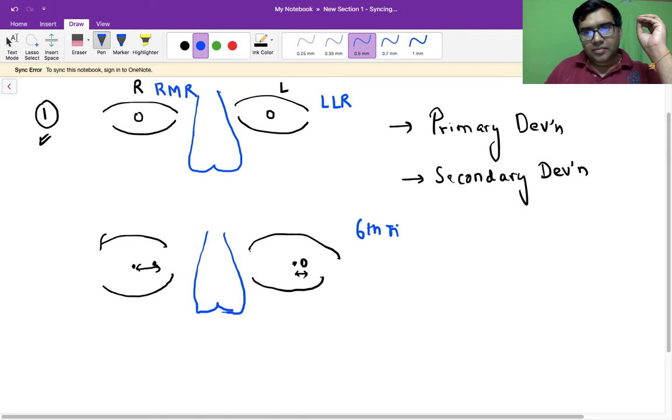nerve palsy. So you know the sixth nerve basically supplies the lateral rectus. So let's say in my left eye my lateral rectus is weak. So if there is an object here, let's say at the point